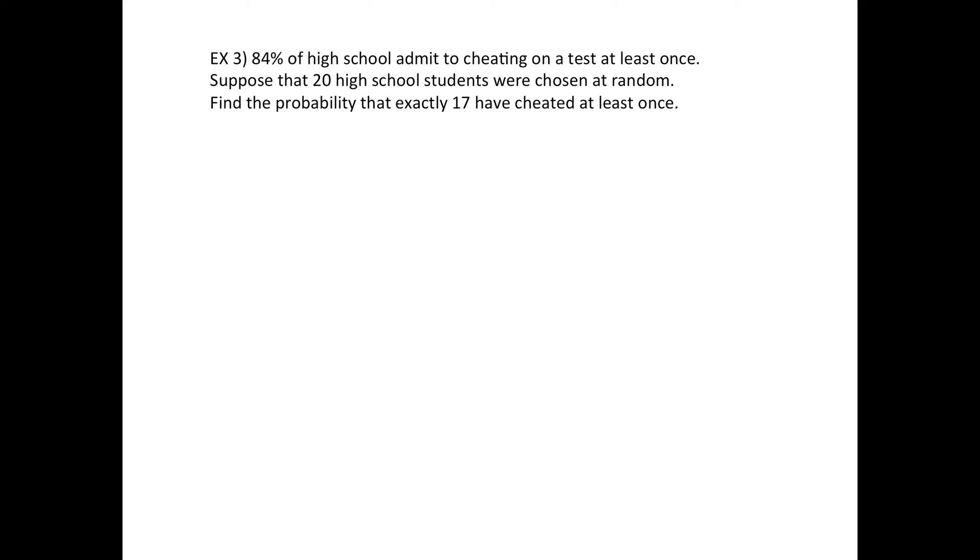All right, now let's do an example from top to bottom. So I read this fact somewhere on the internet, so I'm not sure how true it is, but Google said it was true. Anyway, 84% of high school students admit to cheating at least once. Suppose you've got 20, so that's going to be n equals 20. Find the probability x equals 17 have cheated at least once. So first, you should write down the given information, p.